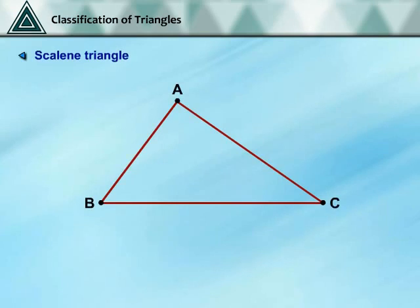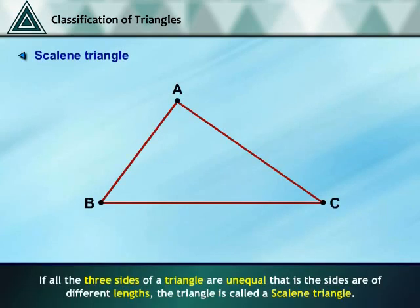Scalene Triangle: if all three sides of a triangle are unequal, that is the sides are of different lengths, the triangle is called a Scalene Triangle.